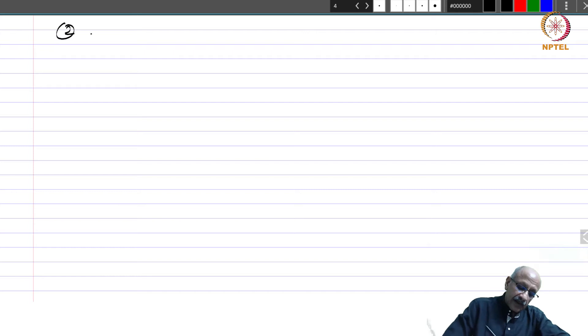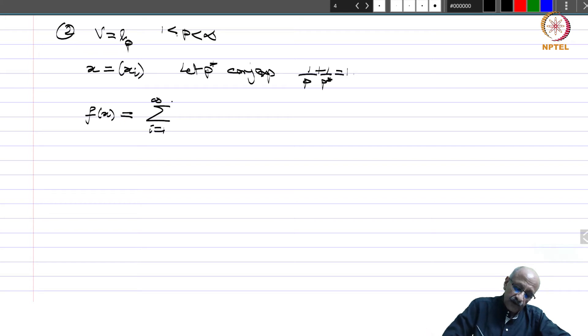Second example, let us take v equals little l_p, 1 less than equal to p. Let me just take 1 less than p less than infinity. So x would be a sequence x_i and you know that sigma mod x_i power p is finite. Let p star be the conjugate exponent. That means 1 by p plus 1 by p star equal to 1. Then define f of x as equal to sigma i equals 1 to infinity x_i y_i, where y equals y_i belongs to l_p star.